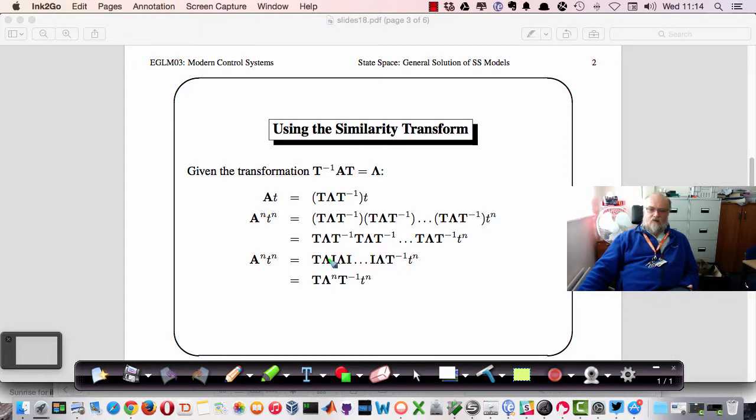Anything multiplied by the identity matrix is itself. So effectively what we've got there is for A to the n times t to the n, we've got T times lambda to the n T inverse. So the only thing that we're actually having to multiply is the matrix which is diagonal with the eigenvalues on the diagonal terms, which is easy to do. So T times this product gives us the function that we want to compute.